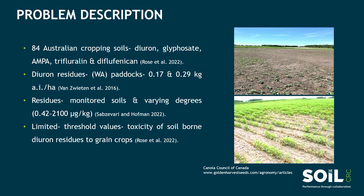A soil survey from 84 Australian cropping soils found that diuron was one of the most frequently detected herbicide residues, together with glyphosate, its primary metabolite AMPA, trifluralin, and diflufenican. Diuron herbicide residue was frequently detected in soil samples of Western Australian paddocks.